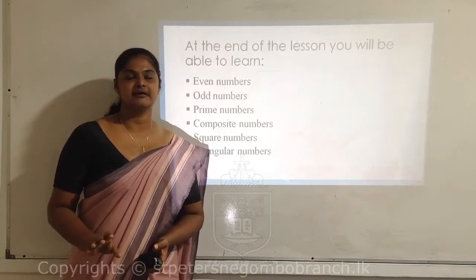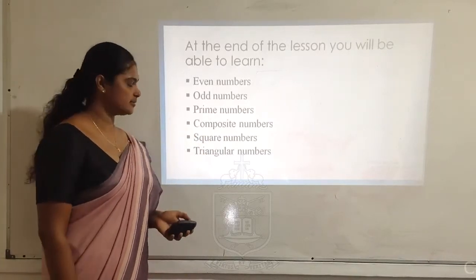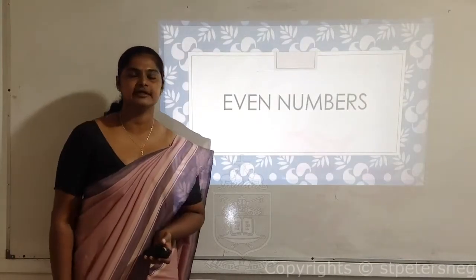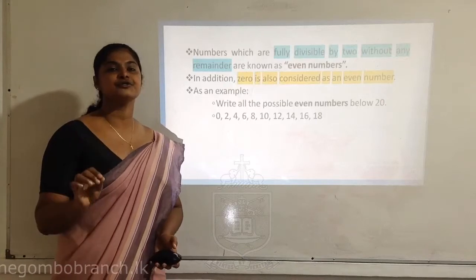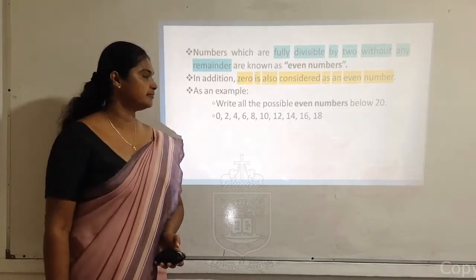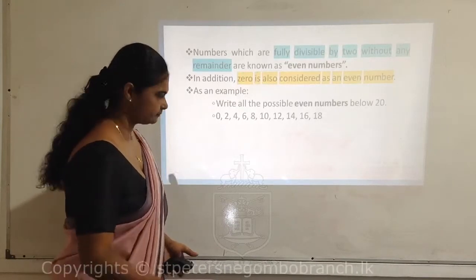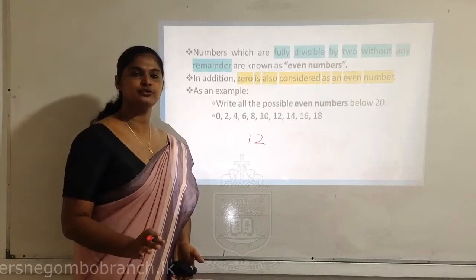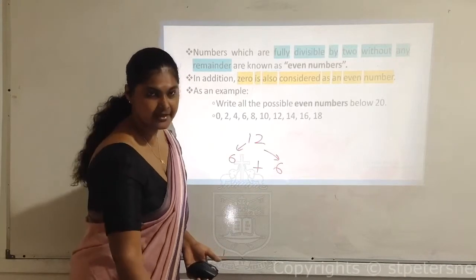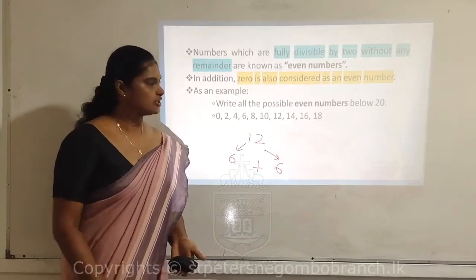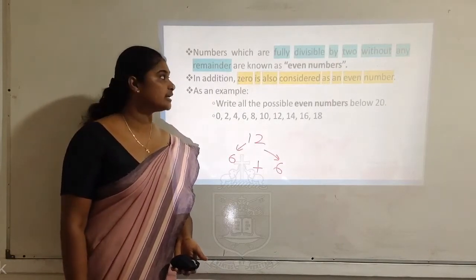Even numbers and odd numbers are very familiar to you. I'm sure you've learned them previously in your primary classes. What do you mean by even numbers? Numbers that are divisible by two without any remainder are known as even numbers. For example, take the number 12 — can you divide this equally into two groups? Yes, as 6. Six plus six is twelve, so you can nicely divide this into two groups. Numbers which are divided by two without any remainder are known as even numbers.